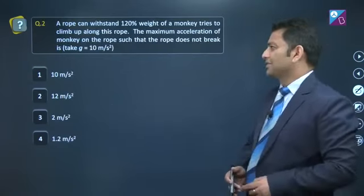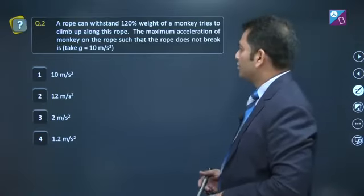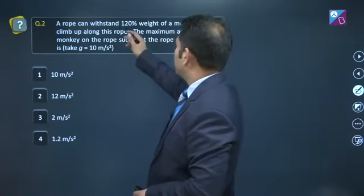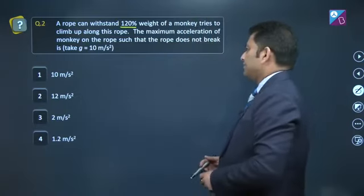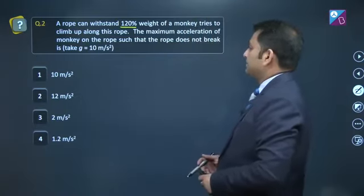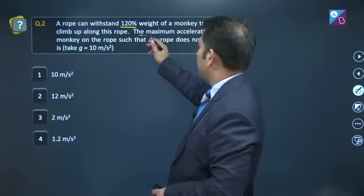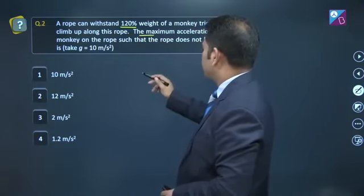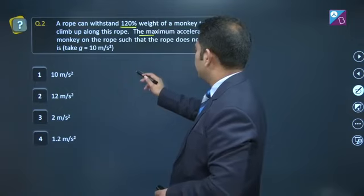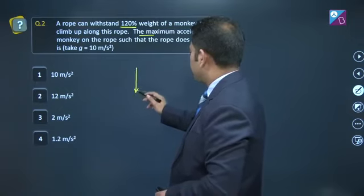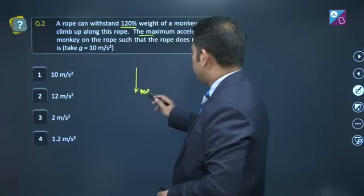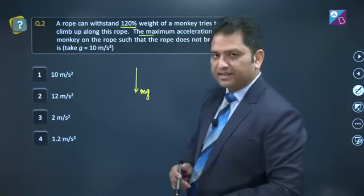Let us go to question number 2. A rope can withstand 120 percent weight of a monkey that tries to climb up along this rope. The maximum acceleration of the monkey on the rope such that the rope does not break. If we make the free body diagram, clearly mg, the weight of the monkey is there.